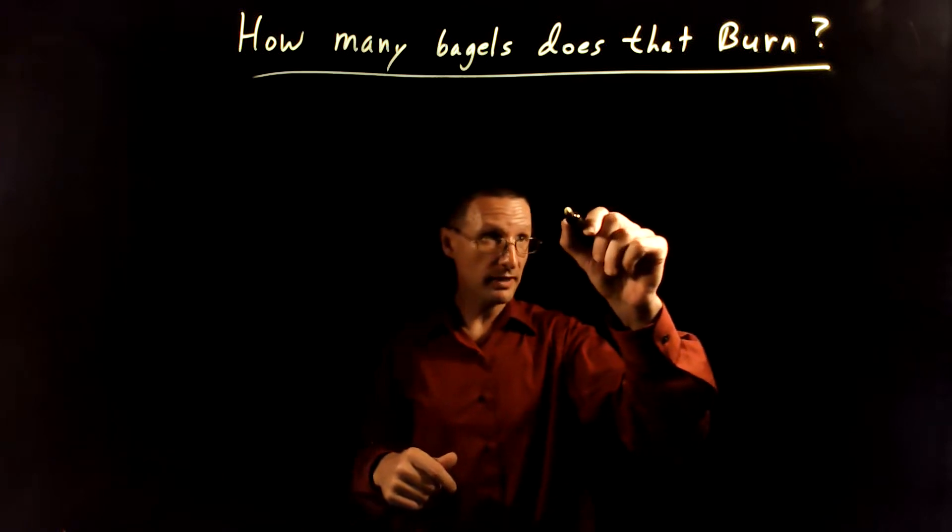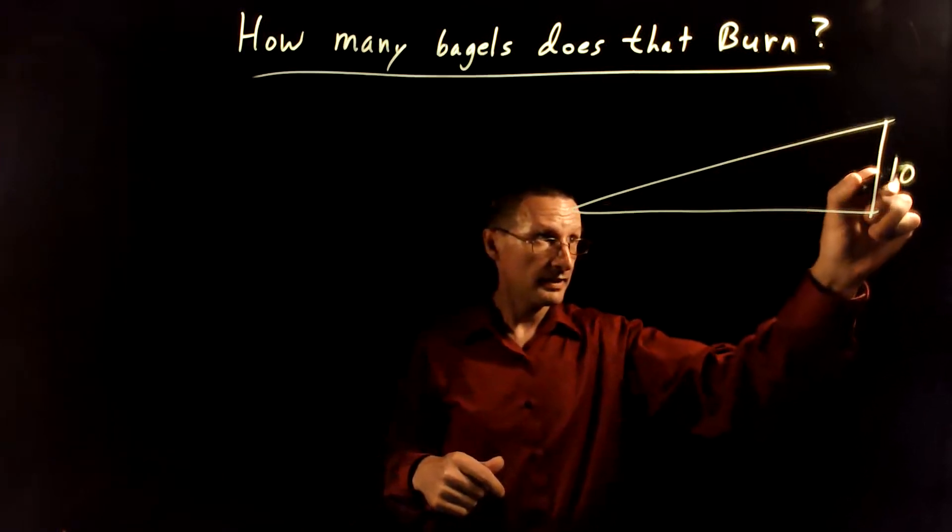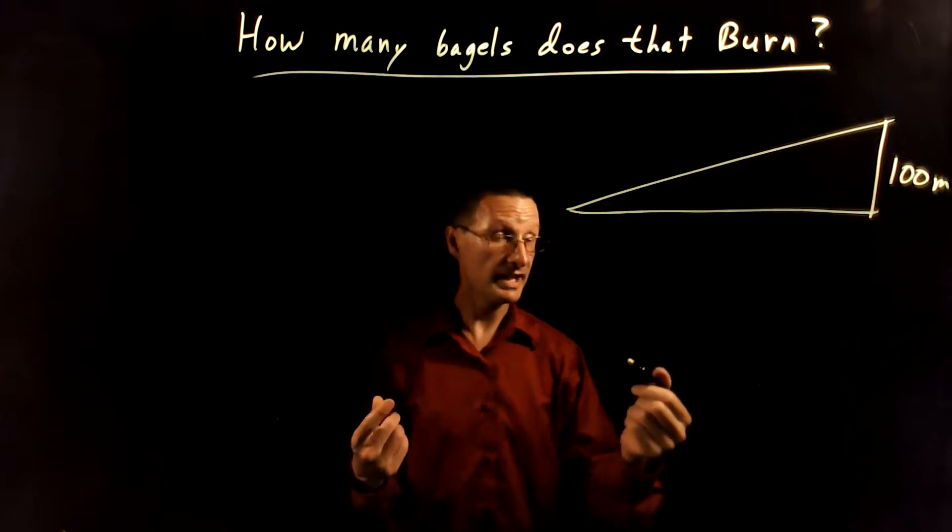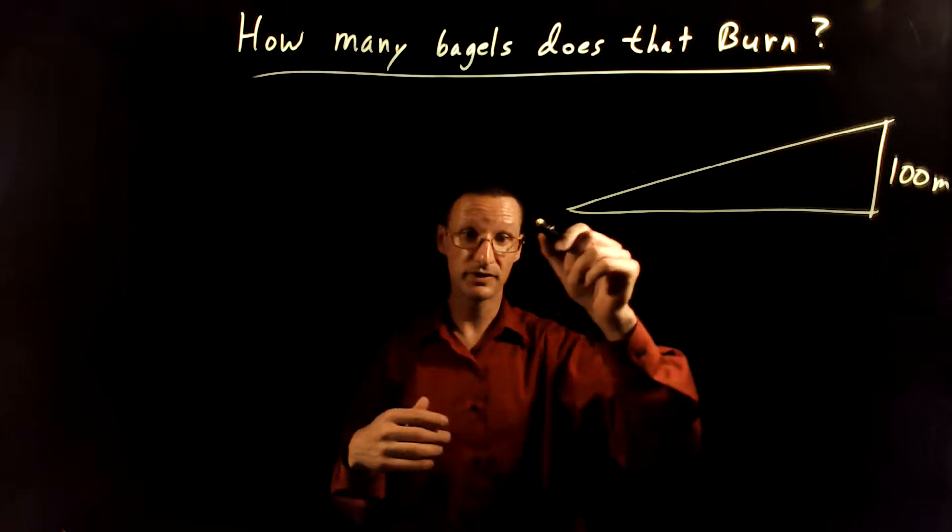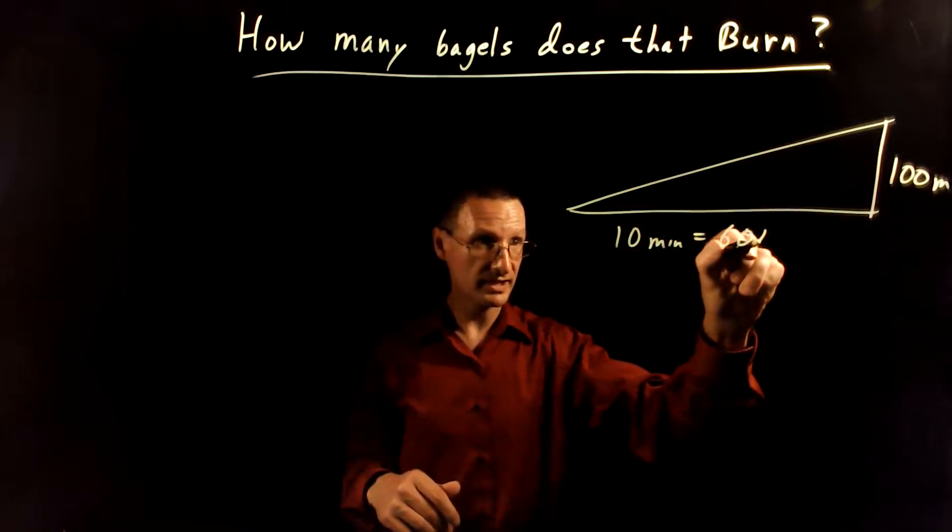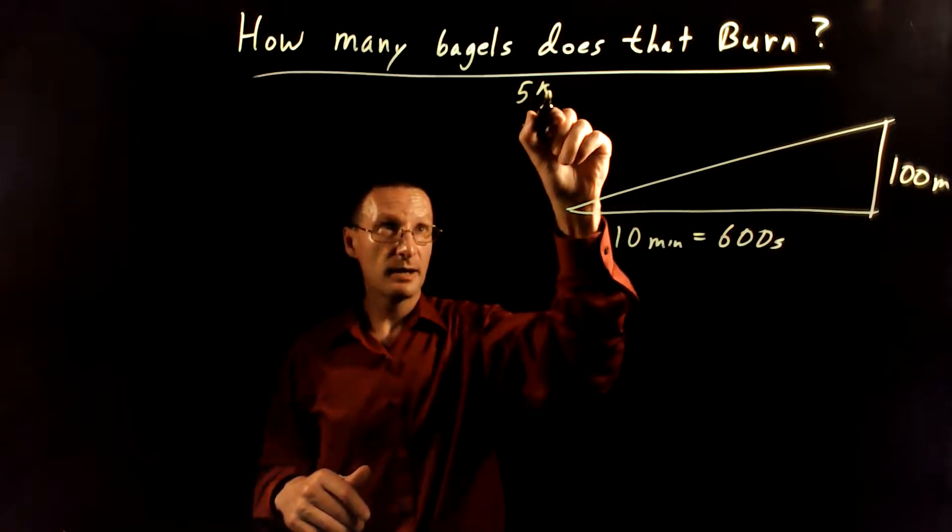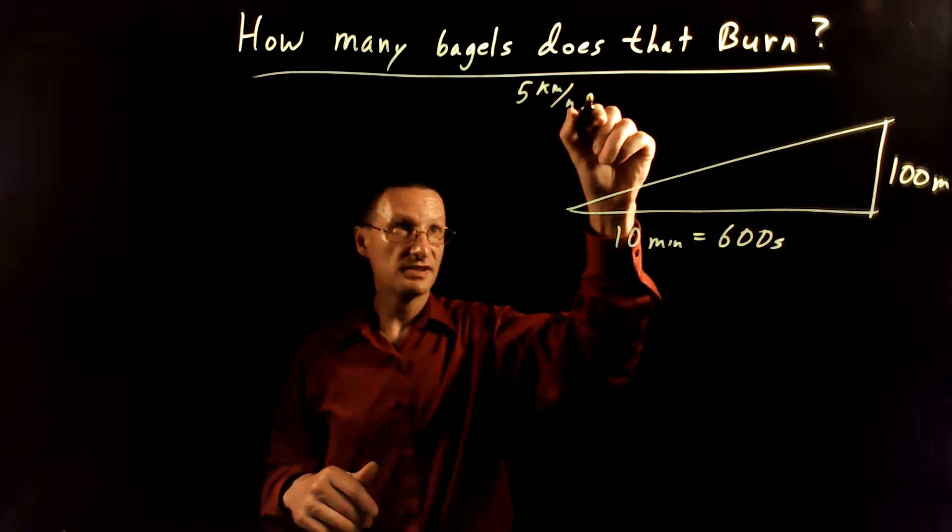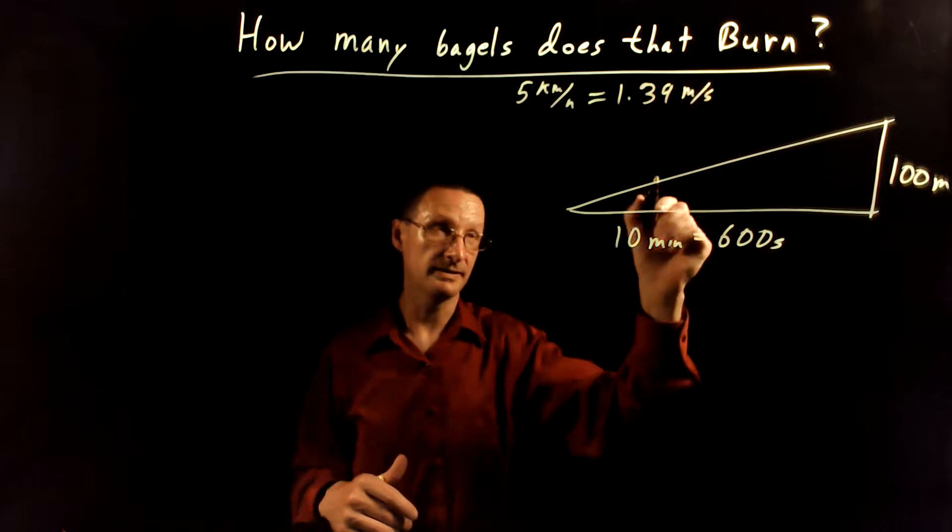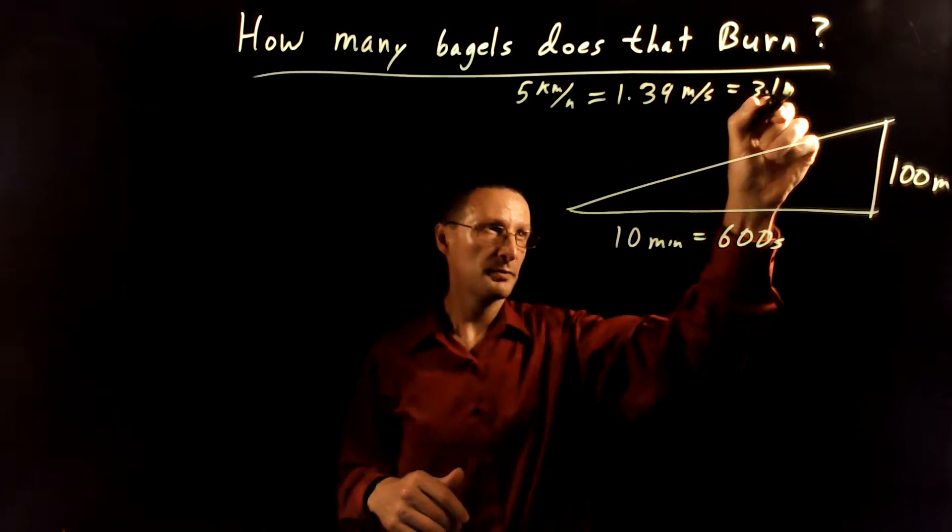So the activity I want to think about here is walking up a hill, and the elevation change that we experience while walking up that hill is 100 meters total from start to finish. We're going to walk for about 10 minutes, which is 600 seconds, and we're going to walk at a speed of 5 kilometers per hour, which is about 1.39 meters per second, or about 3.1 miles per hour.